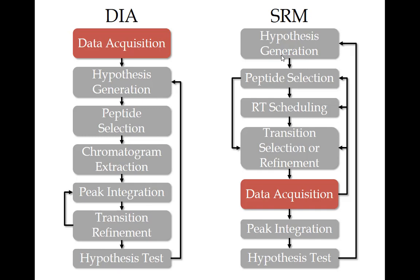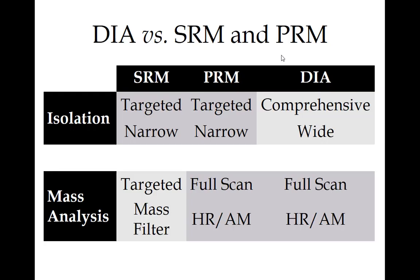There are still a lot of reasons you'd want SRM — it will be more sensitive, cheaper per analyte, and might have the best assay. Certainly if you want to measure one analyte over and over with high quality, SRM is probably what you want to do. The comparison table for DIA versus SRM and PRM I'll leave in the slides as a reference since I've already covered these concepts.